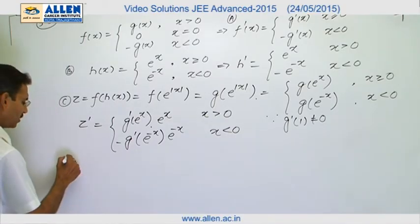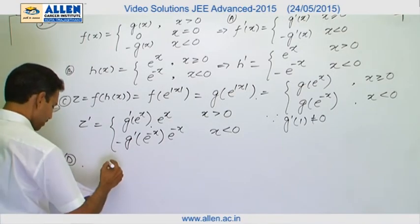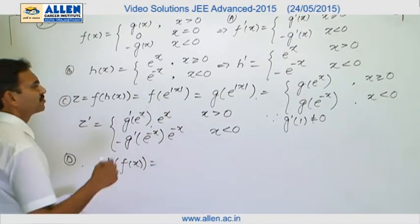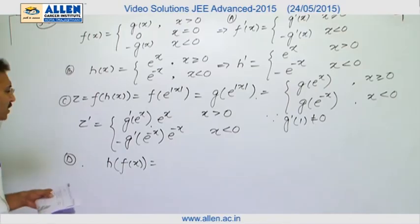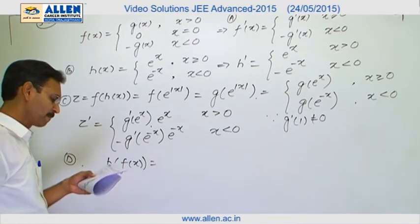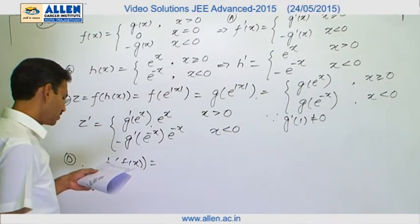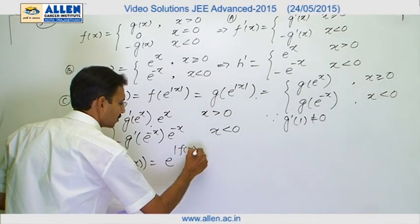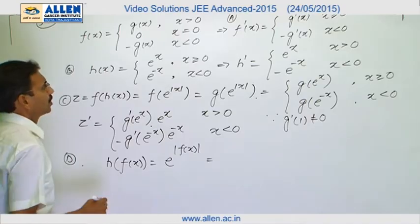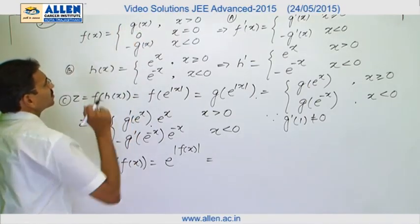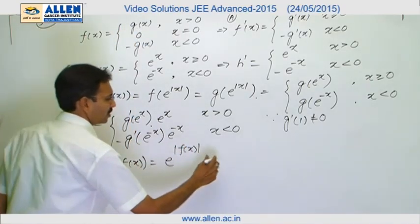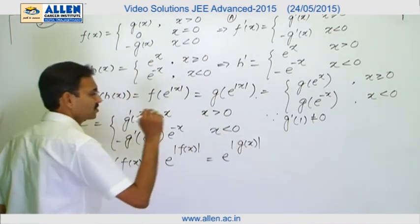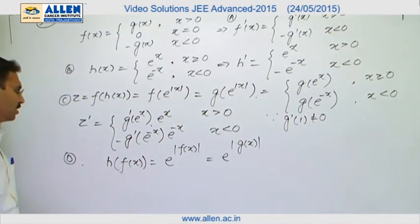Now, we will verify the d one. For d it is h fx. I am using differentiation. We can go for first principle. I will apply it in that last part. H fx is e power mod fx. Now, by using this definition, I can say it is e power mod g x because even minus g x is not going to make any difference. This is the function.